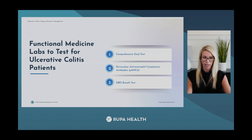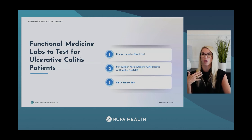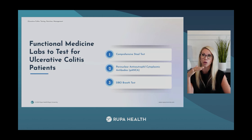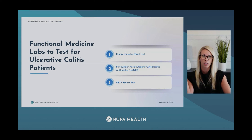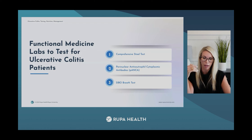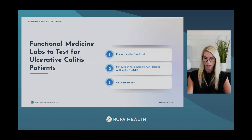Breath testing may also be worth considering if you suspect SIBO. There is a noted increased prevalence of SIBO in patients with IBD, and the frequency of SIBO in UC patients is estimated at up to 18%. Options include the three-hour SIBO breath test by Genova or TrioSmart by Gemelli, both available on the Rupa platform.